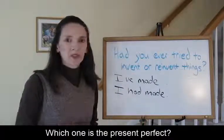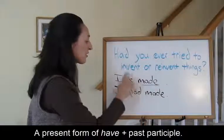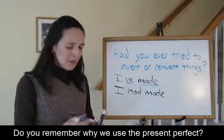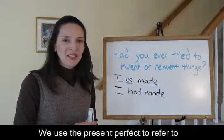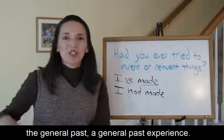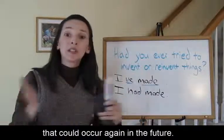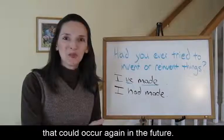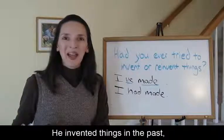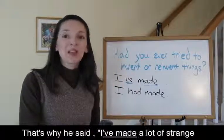A present form of have plus the past participle. Do you remember why we use the present perfect? We use the present perfect to refer to the general past, a general past experience, but also events or actions that could occur again in the future. Eric is an inventor. He invented things in the past, and it's likely he'll invent more things in the future. That's why he said, I've made a lot of strange musical instruments.